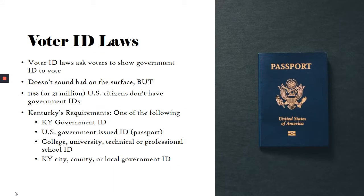We're going to talk about a couple of different voter suppression tactics and what you can do to stop them. The first are voter ID laws — laws that ask voters to show a government ID to vote. On its surface this doesn't sound like a bad thing, until we look at the numbers. In the United States, 11% of citizens do not have government IDs, which comes out to close to 21 million people who, if they don't have their IDs, are not able to vote. This is an example where people are given the right to vote, but not the ability to vote.